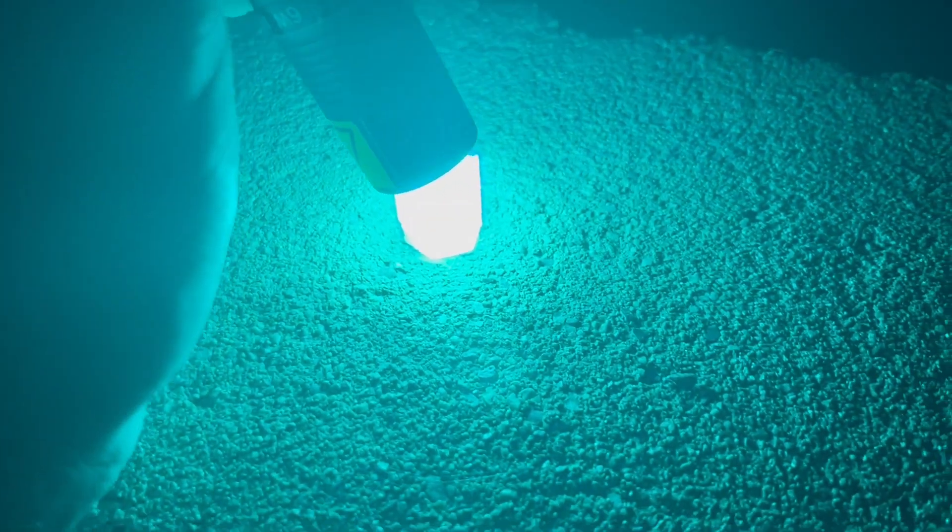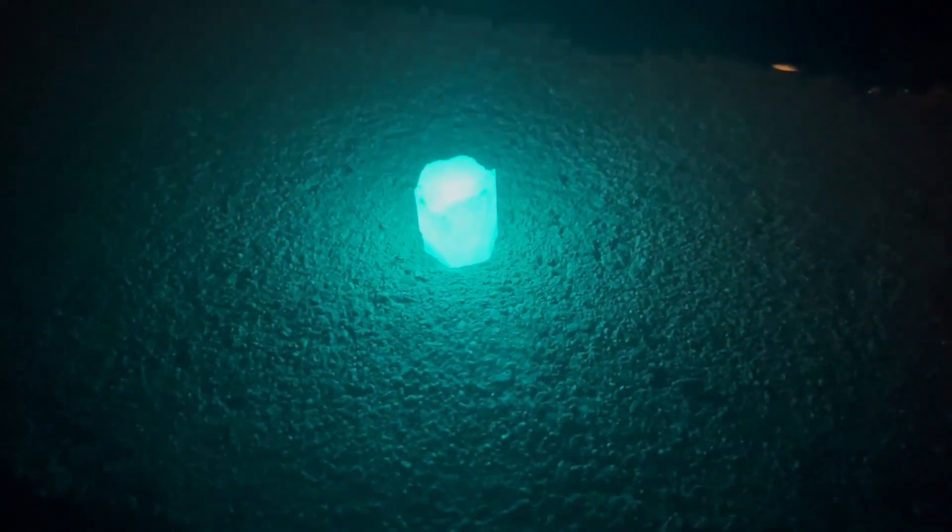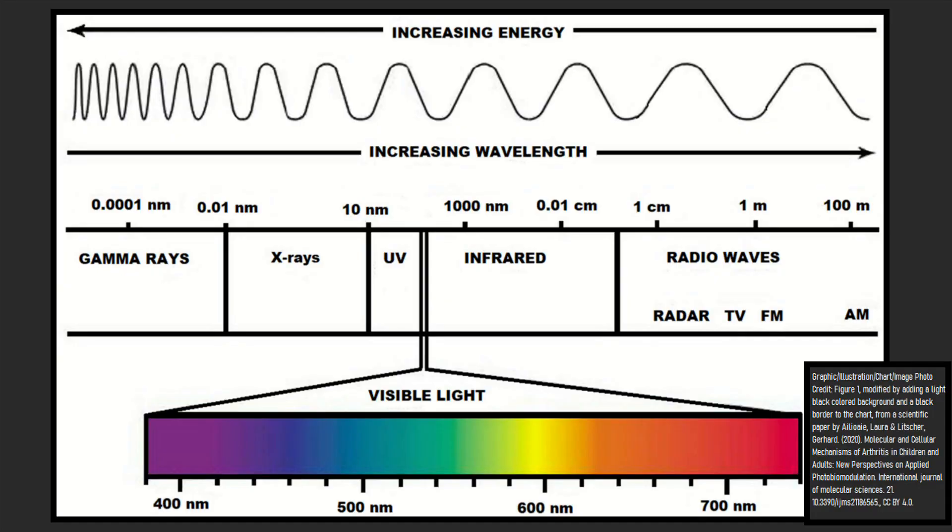In comparison, a phosphorescent compound will continue to glow for a period of time after the energy source has been turned off. Light has a variable wavelength with visible light representing an area in the middle of the pack.